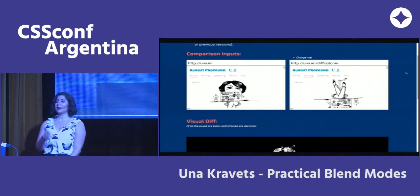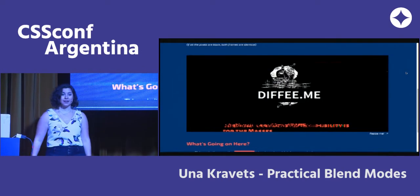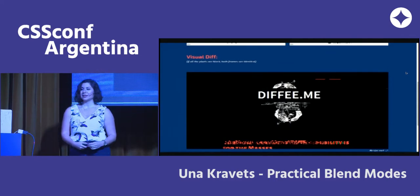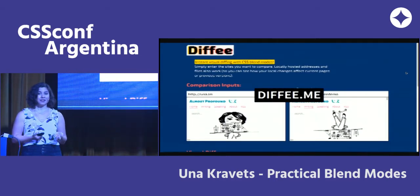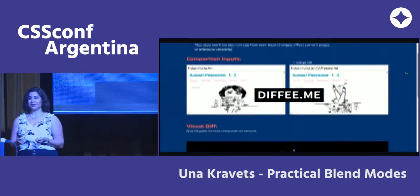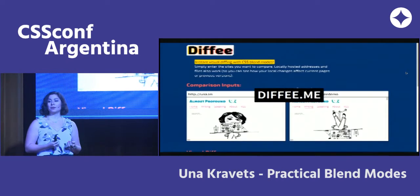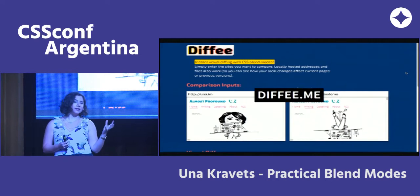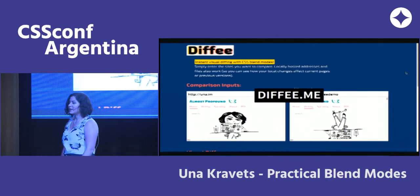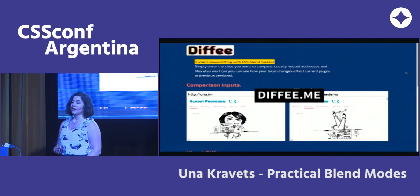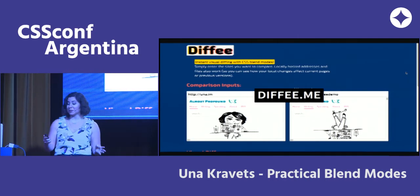I took that idea and created a site called Diffy.me, which allows you to do visual regression testing in your browser with just one line of CSS code. It works locally behind your firewall, so you can compare a staging site to a local or active site and see what visual regressions you've introduced. CSS is pretty cool.